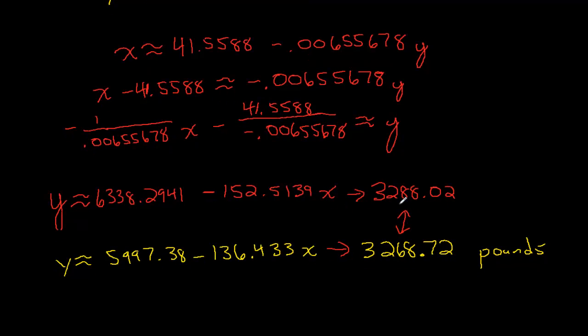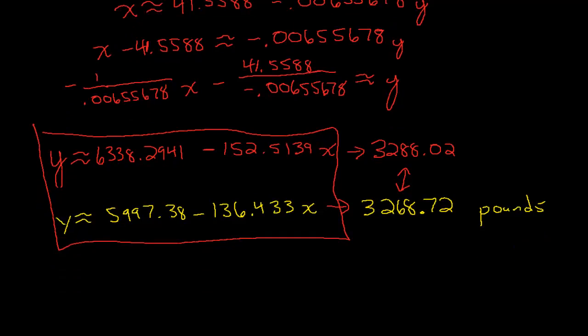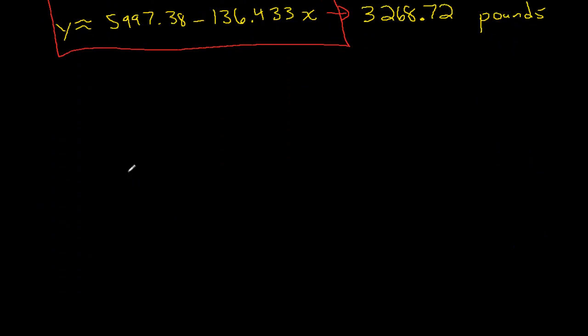When you write the equations in equivalent forms, you really do see that these two lines are different. Why did it give me a different line? I'm going to talk about the theory of least squares and how that least squares line arrives, and that'll give us some insight into where it came from.